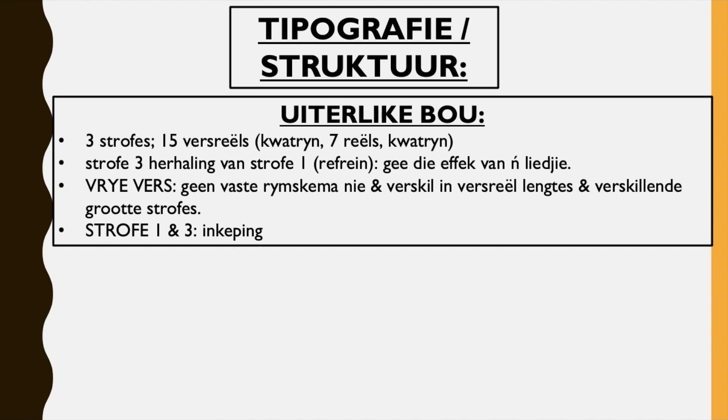And then tipografie/struktuur is the structure of the poem — eitelike bouw, what it literally looks like. Three strofes, three stanzas, 15 fasiaels, 15 lines. The first and third stanza is a quatrain, and the second stanza is seven lines. Strofe drie is a herhaling van strofe een — it's a refrain, geen effek van 'n liedjie. Because stanza three is a repetition of stanza one, it gives us the idea of a chorus and therefore the effects of a song.